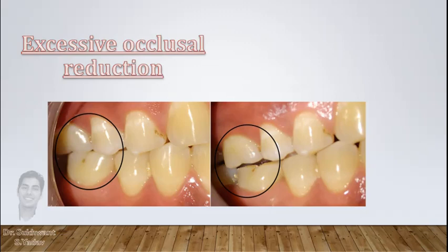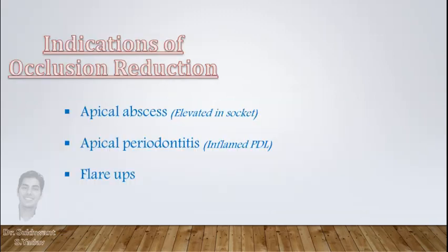Sometimes, to be on the safer side, clinicians do excessive occlusal reduction. This makes the tooth totally out of occlusion with no occlusal load. During RCT there will be no pain, but as soon as the crown is placed and the tooth comes into function, residual inflammation gets aggravated and symptoms can come back. Occlusal reduction should be done only in specific cases — where the tooth is elevated in the socket as in an abscess, or where the PDL is inflamed.